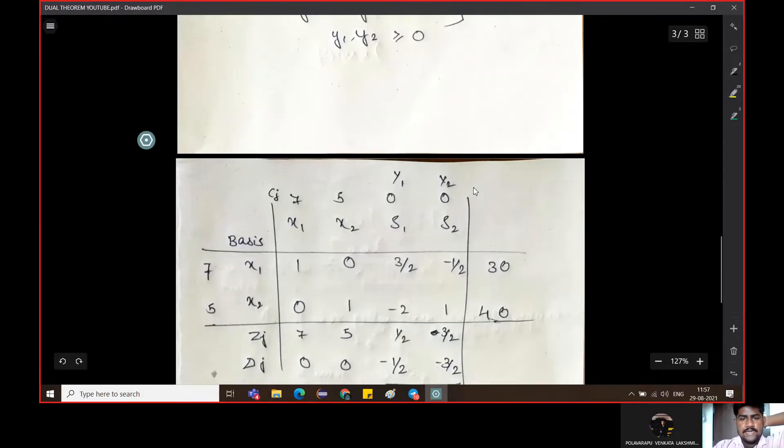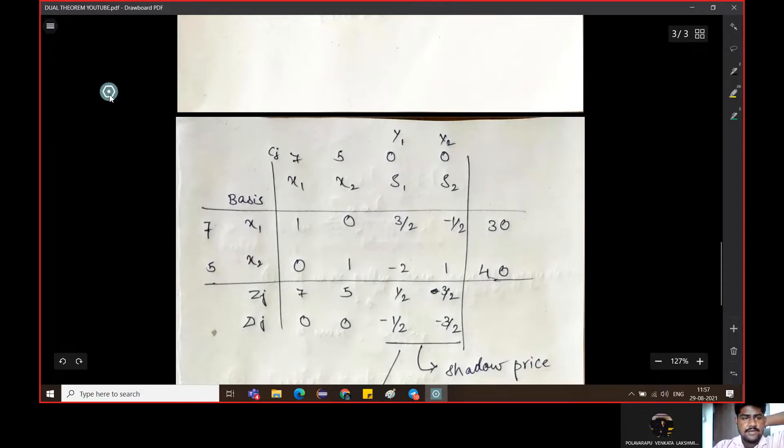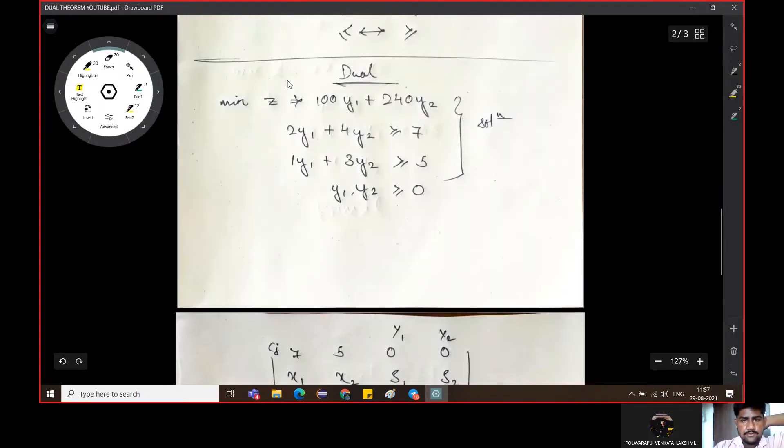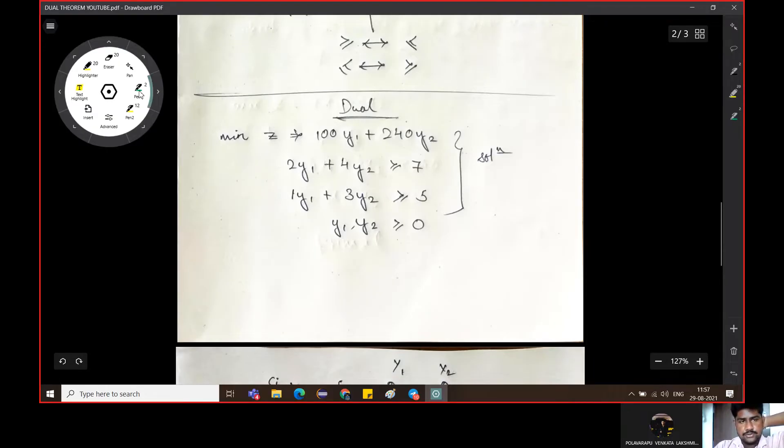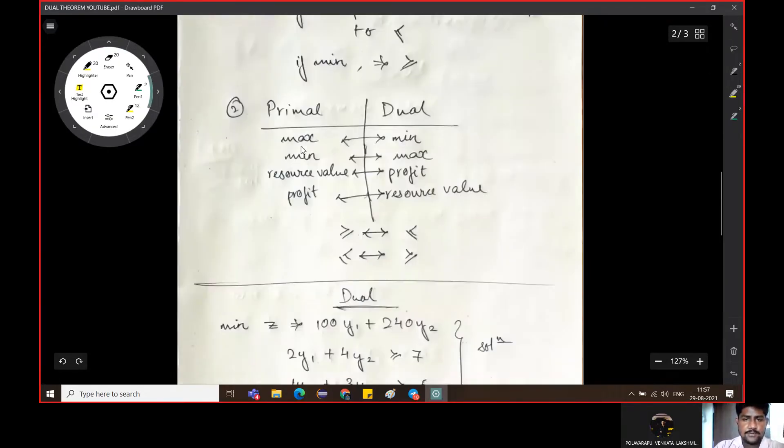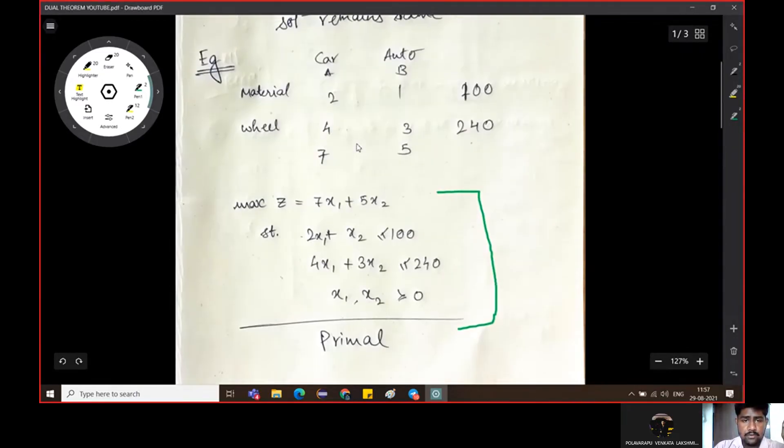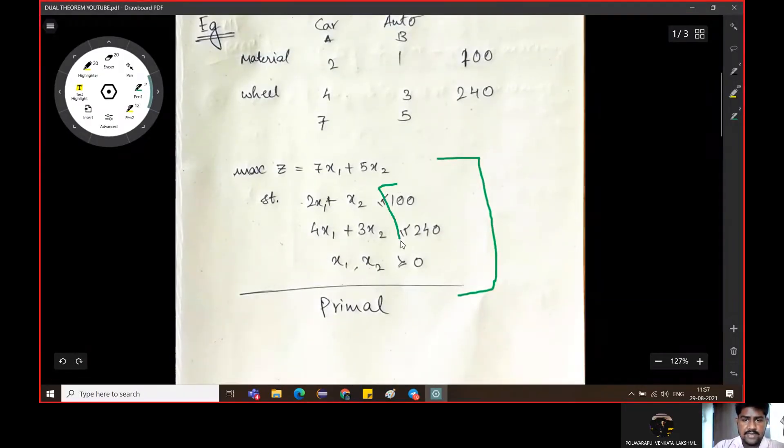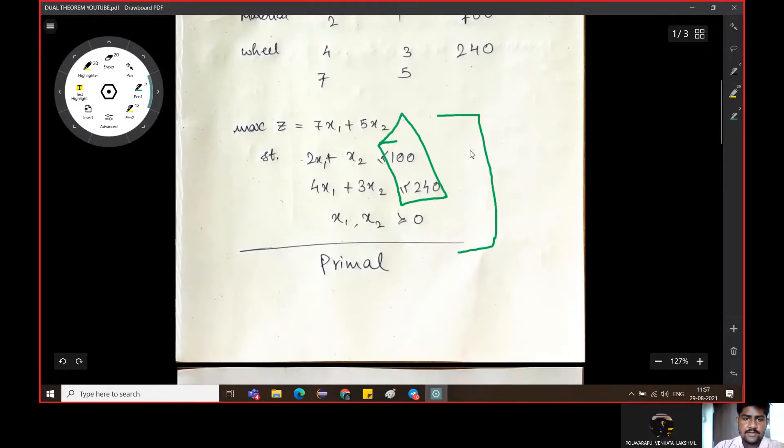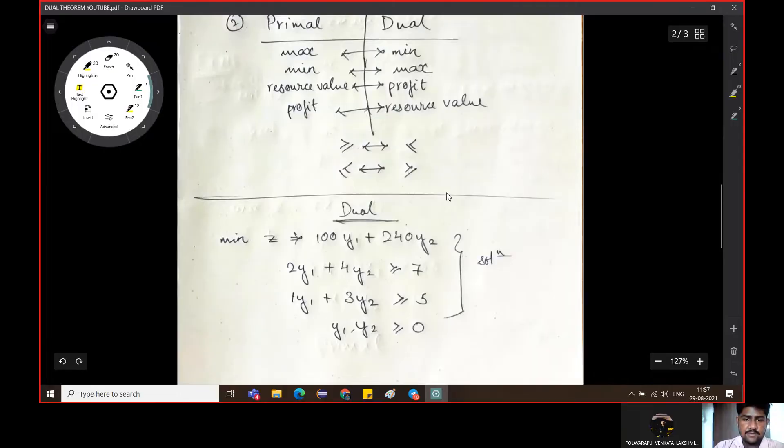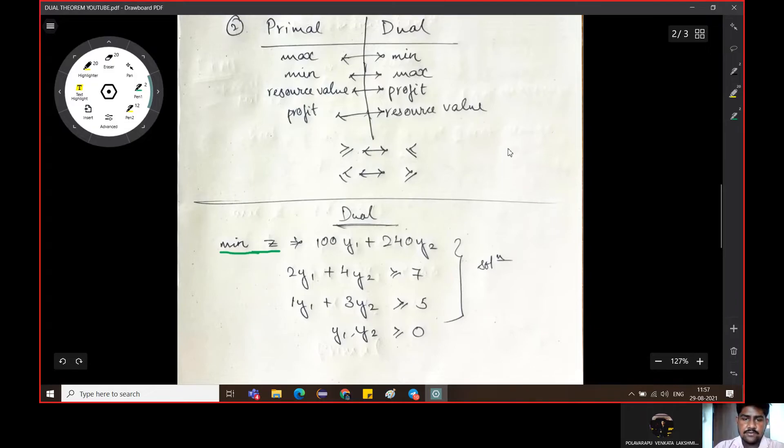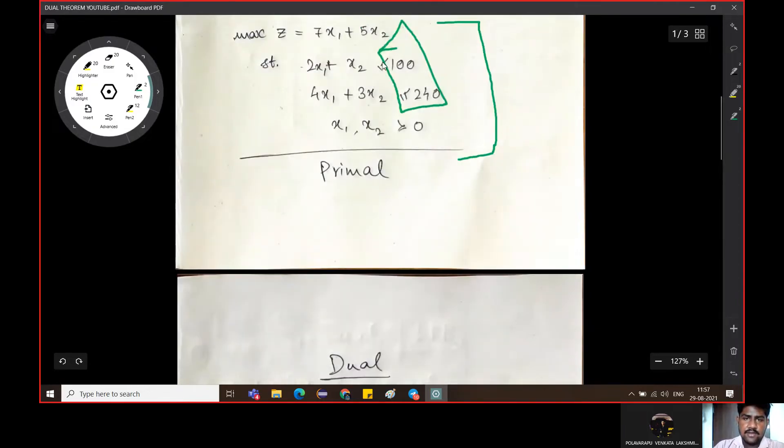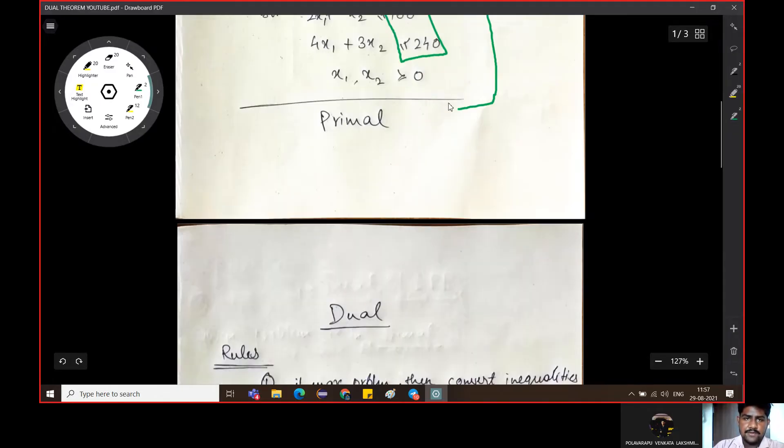Let's jump into the solution. This table is a simplex solution. These are given, right? 100 and 240. So 100 y1 plus 240 y2 is equal to z and minimize. Maximize each other and minimize. So minimize z is equal to 100 y1 plus 240 y2. Done. Then constraints.